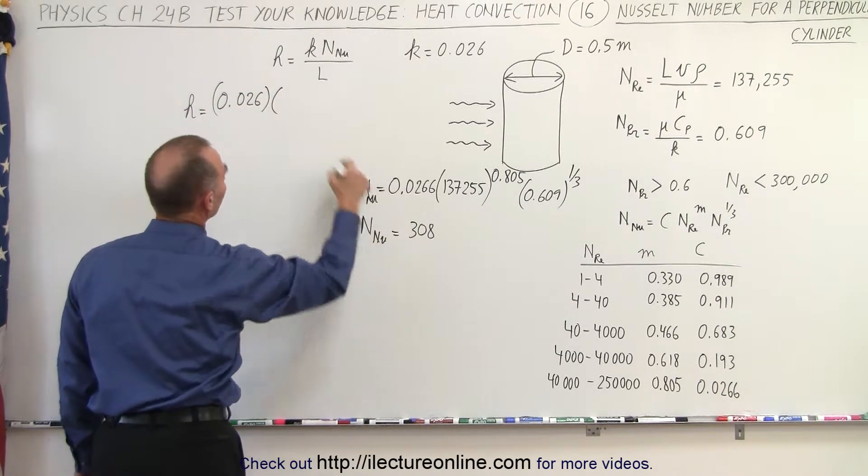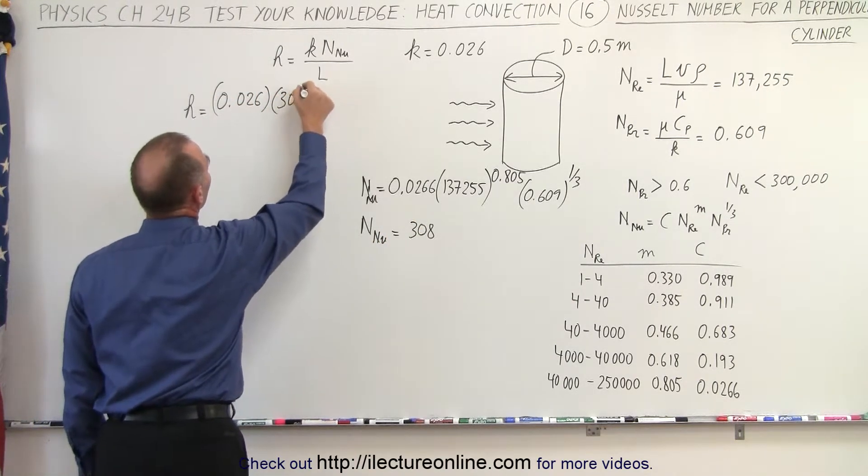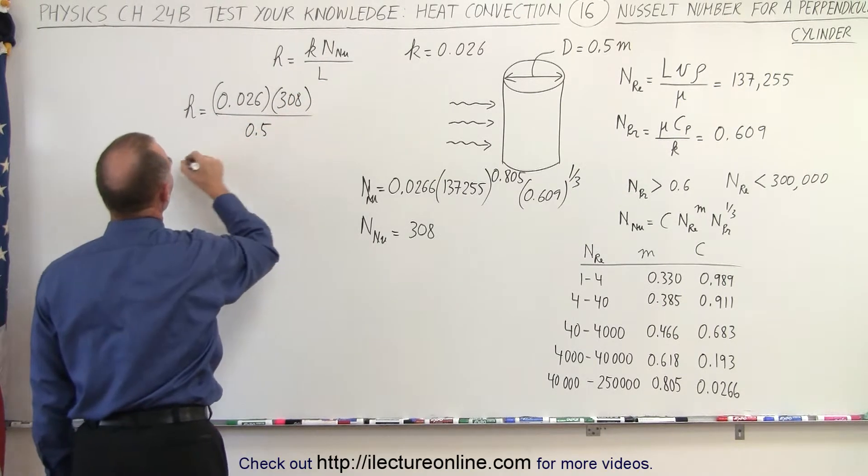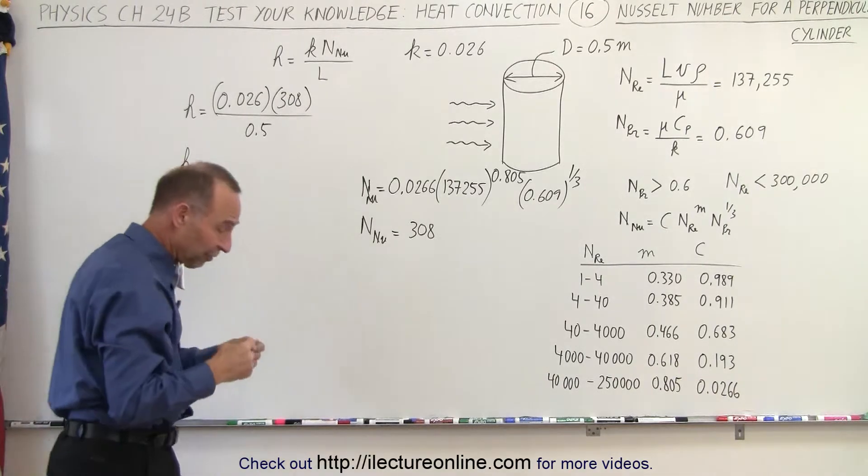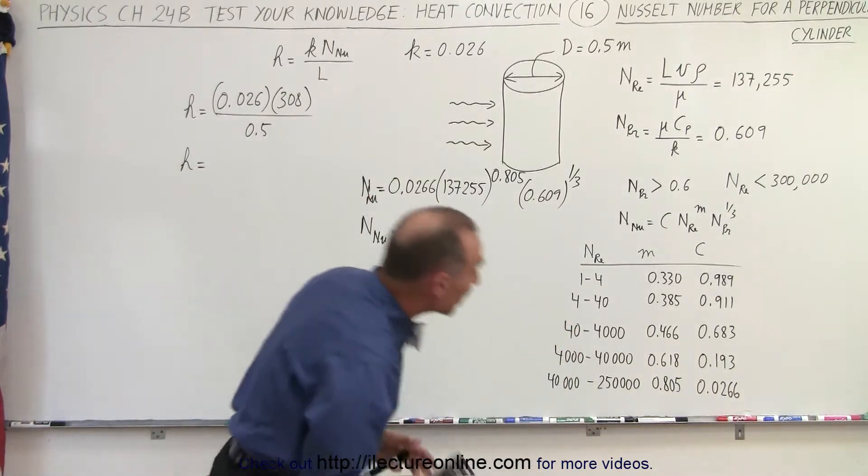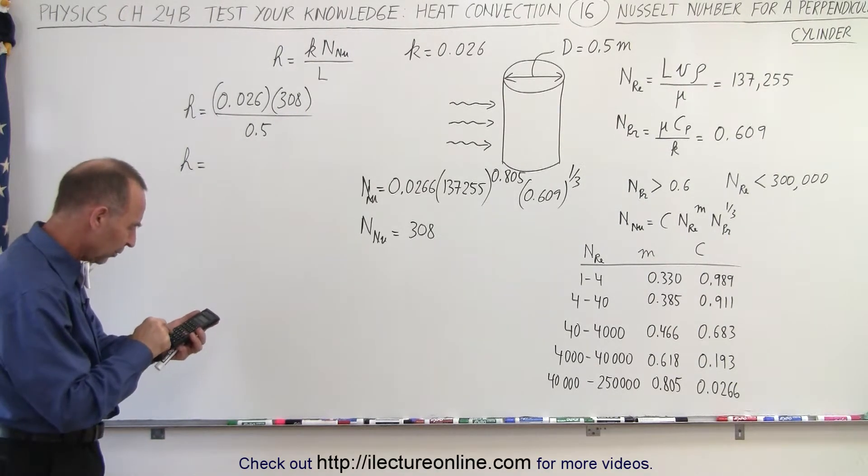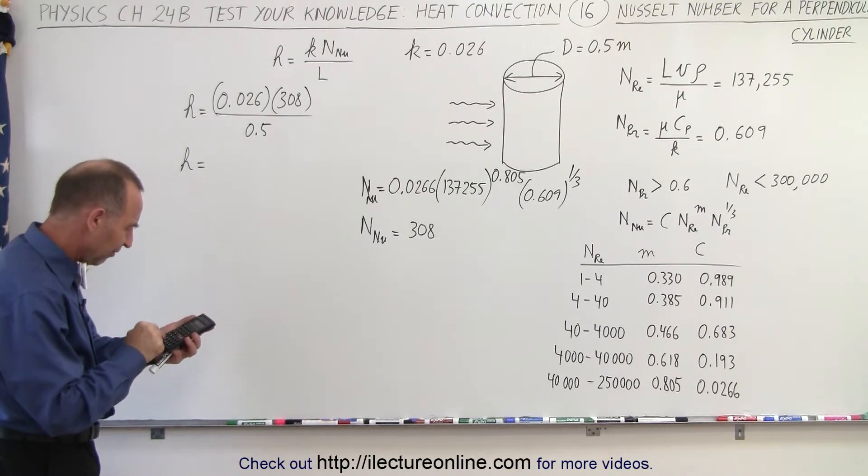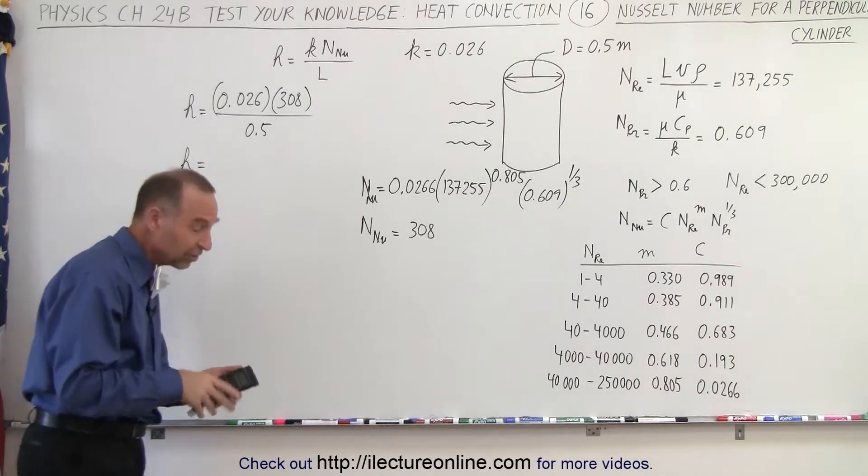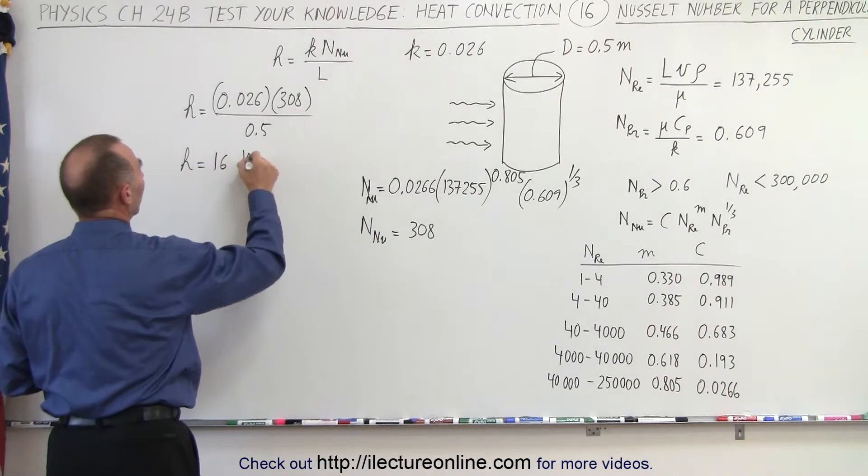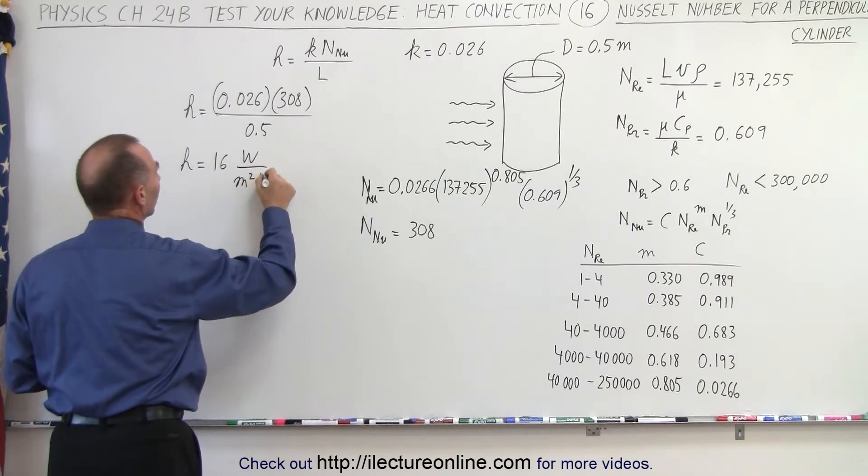Multiply times the Nusselt number, which is 308, and then divided by the length. In this case, it would be 0.5. And so that gives us a transmission coefficient in terms of watts per square meter per kelvin. So 308 times 0.026 divided by 0.5, and we get 16. So that gives us 16 watts per square meter per kelvin.